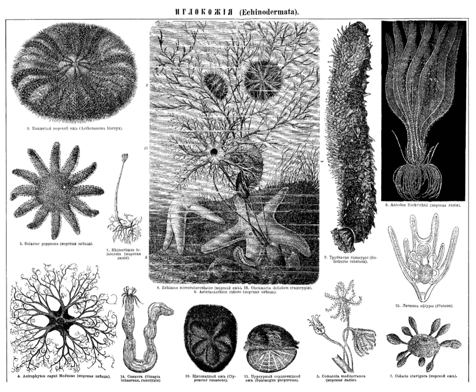There is no true heart and the blood often lacks any respiratory pigment. Gaseous exchange occurs via dermal branchiae or papulae in starfish, genital bursae in brittle stars, peristomial gills in sea urchins and cloacal trees in sea cucumbers; exchange also takes place through the tube feet. Echinoderms lack specialized excretory organs and so nitrogenous waste, chiefly in the form of ammonia, diffuses out through the respiratory surfaces.